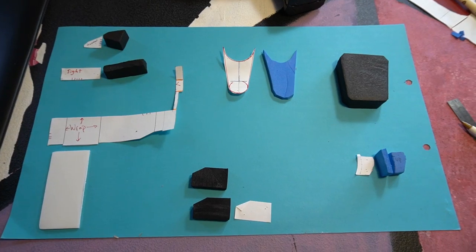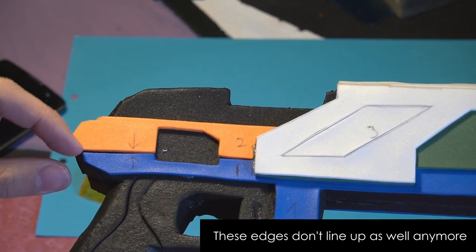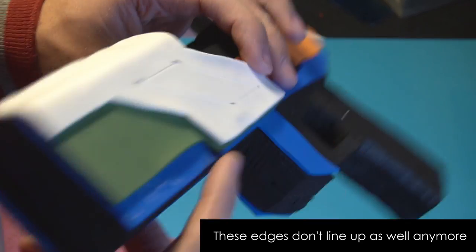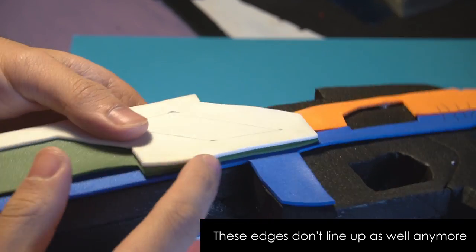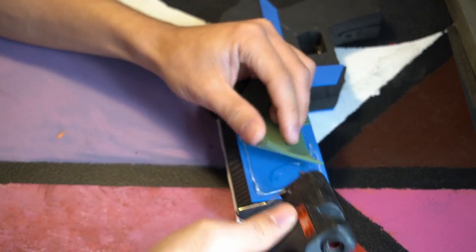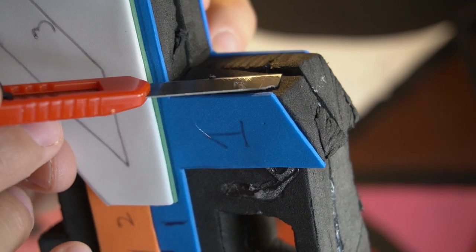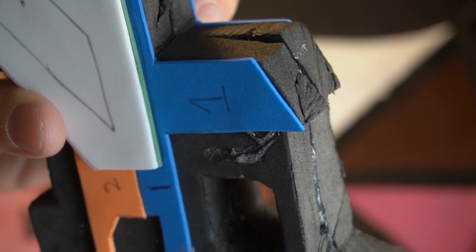Then we'll heat seal all the foam parts. I found that the craft foam shrank quite a bit after heat sealing, so you might want to pre-heat seal that before you trace out the template and cut it out. Then we'll glue it together. And once you've glued it, you can trim any edges with the knife to make them line up better, or you can use a dremel to smooth it out.